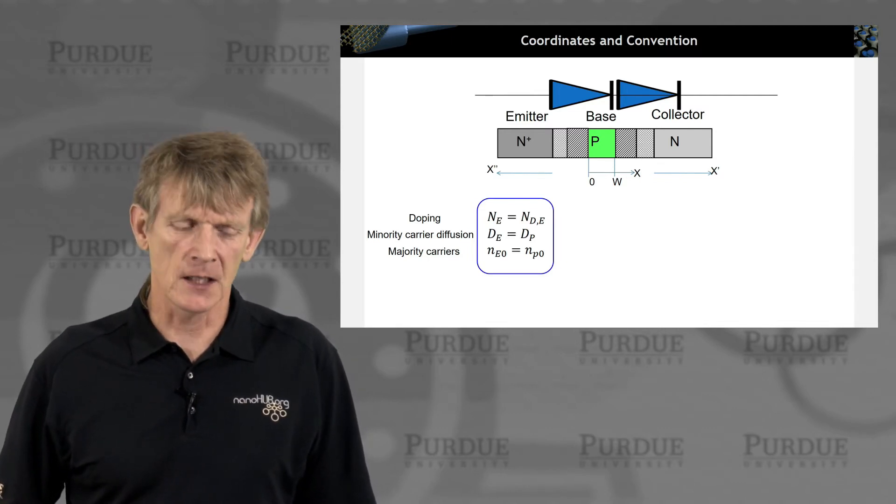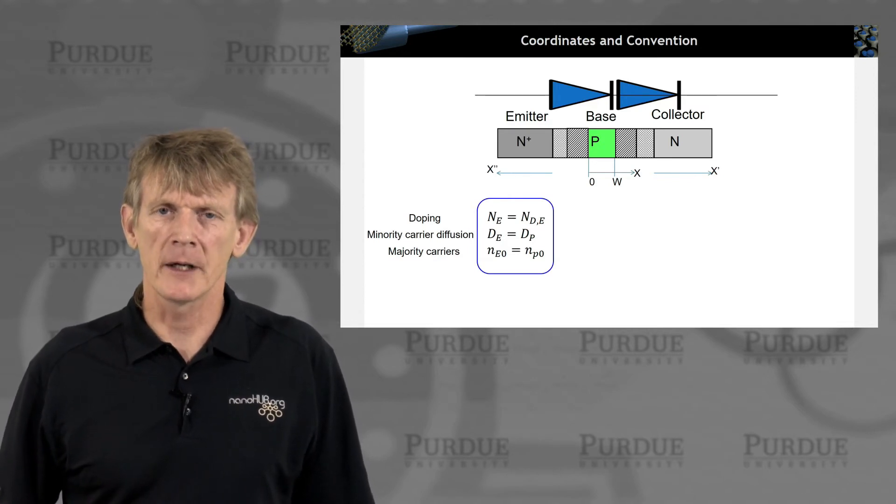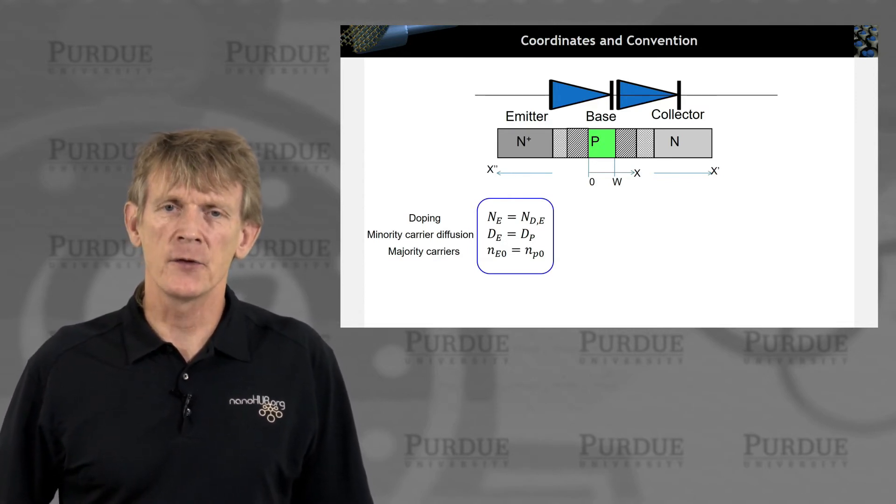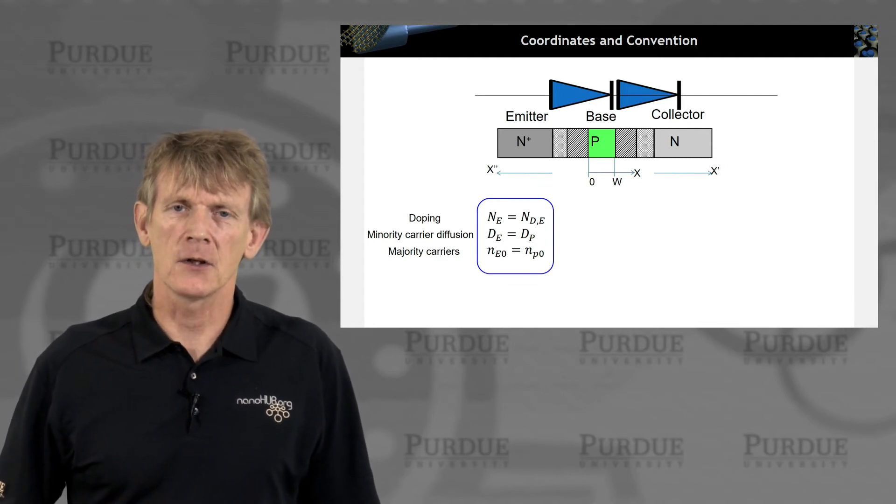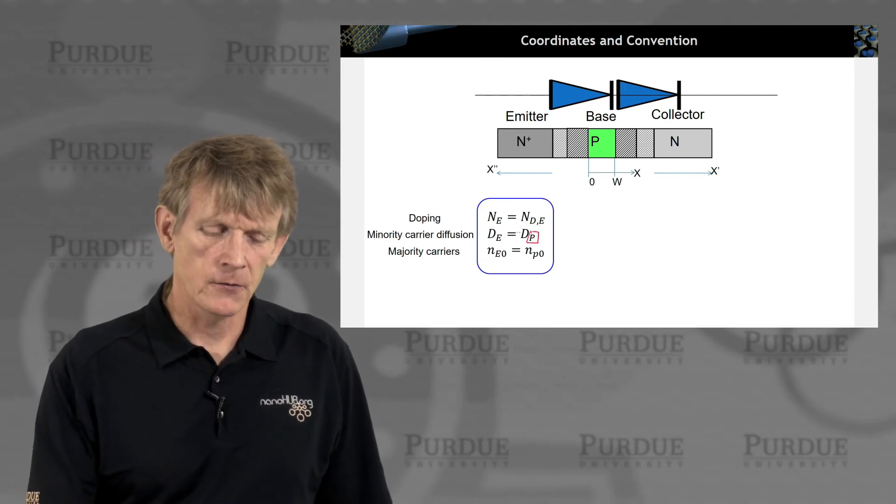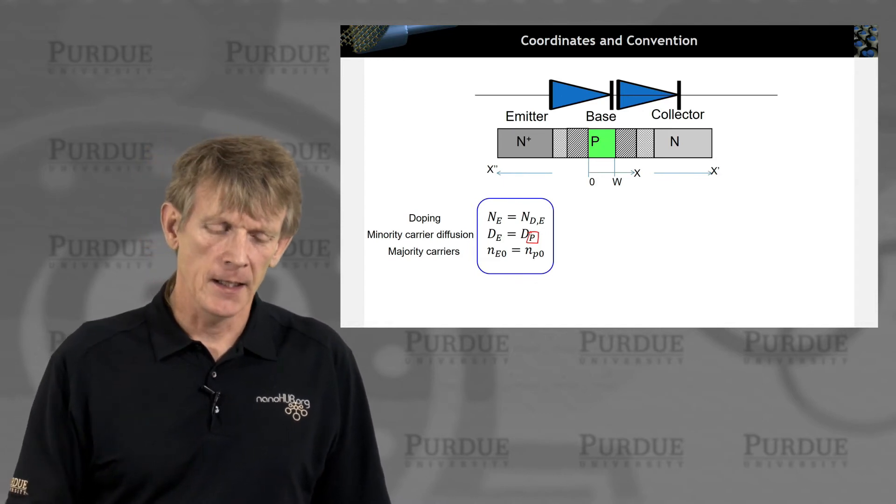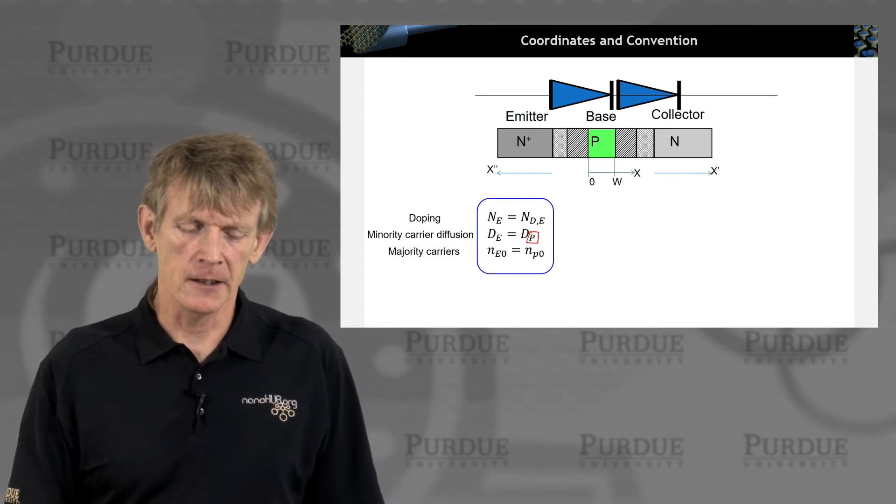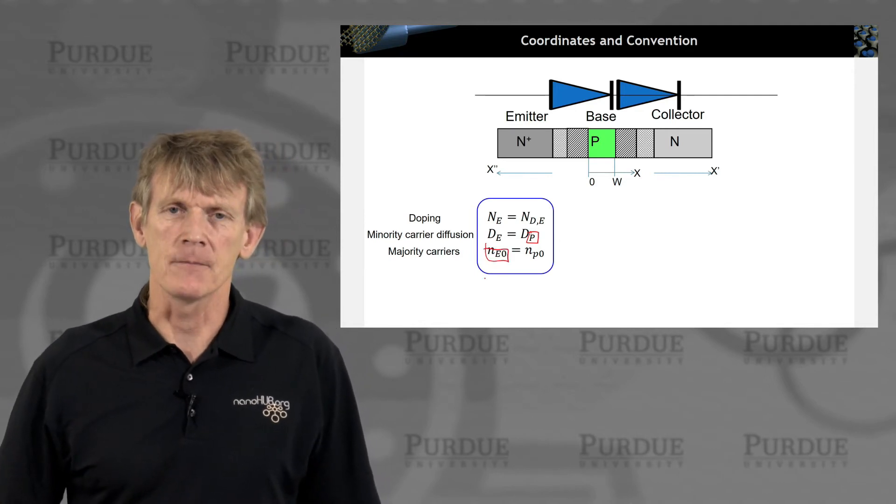So on the emitter side, we have a doping, and this is a donor doping to make it n-type. There's a diffusion coefficient for the minority carriers on the emitter. And the minority carriers in the emitter are the holes. That's why it's a diffusion coefficient of the holes. And we have a majority carrier, which we will also index with an index E.